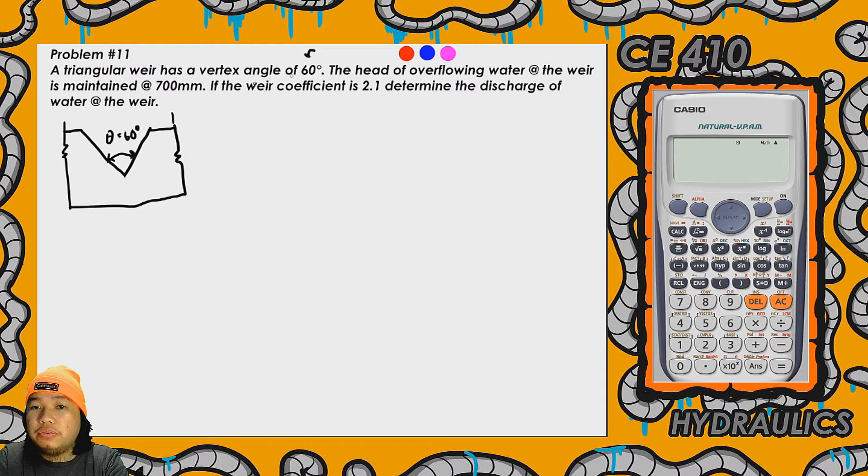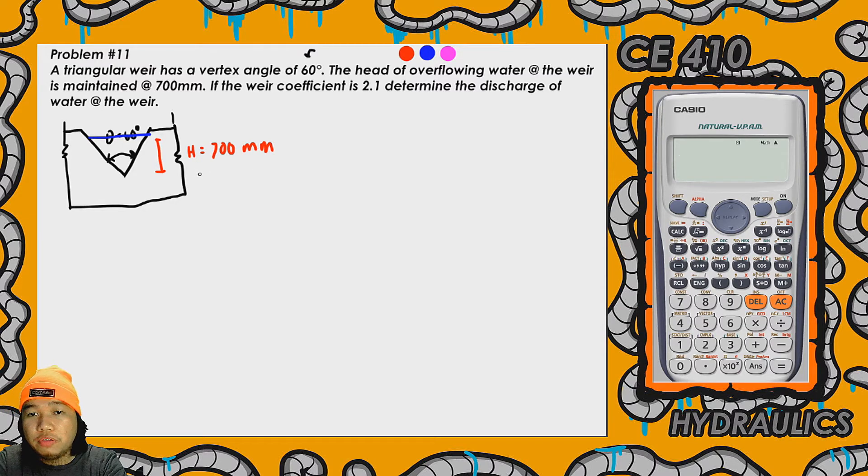So ayan, ang sabi sa problem ay maintain daw yung head ng water. So baba ko ng konti. So maintain daw yung head ng water at h is equal to 700 millimeters. So given naman yung weir coefficient, so that's C sub w. So hindi yan yung C o yung coefficient of discharge at yan ay C sub w. At take note lang din na more than 1 yung value ng weir coefficient unlike discharge coefficient. Ang coefficient of discharge should be always less than 1.